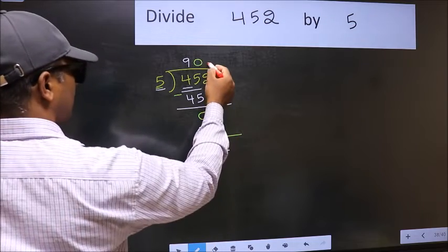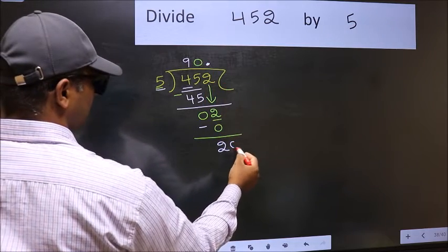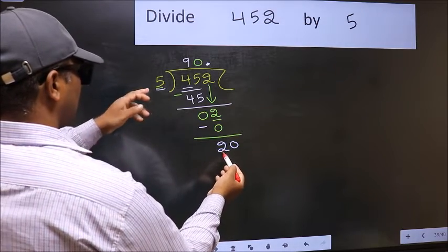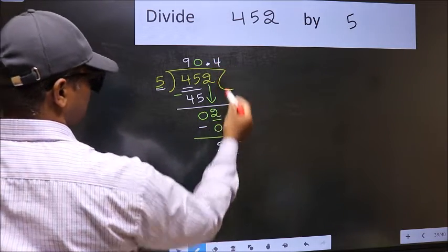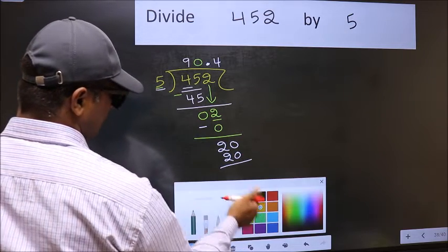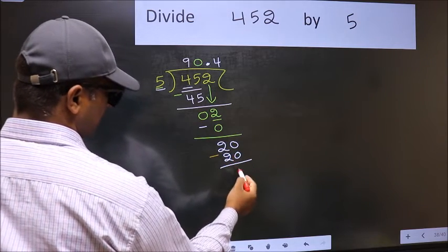So now we can put dot and take 0. So 20. When do we get 20 in 5 table? 5 fourths, 20. Now you should subtract. 20 minus 20, 0.